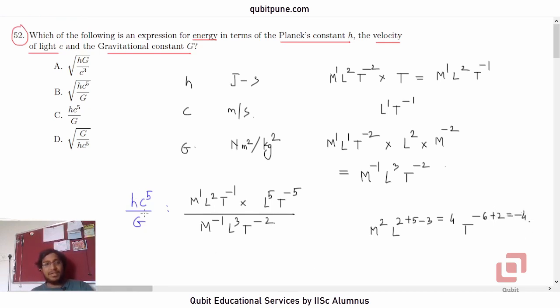So the dimensions of h c raised to 5 upon G are m raised to 2, l raised to 4, and t raised to negative 4. And this happens to be the square of m1, l2, t raised to negative 2. Isn't it? That means h c raised to 5 upon G has dimensions of square of energy. So root of that must have the dimensions of energy. And root of this is what? h c raised to 5 upon G's root is option b.